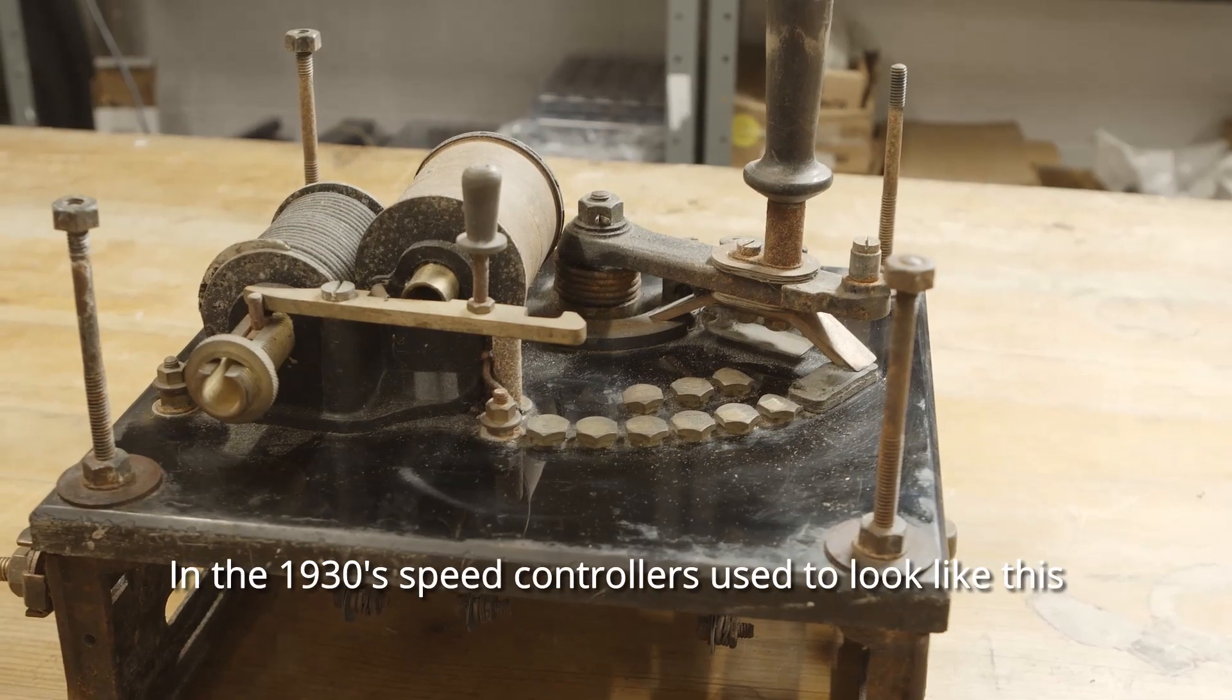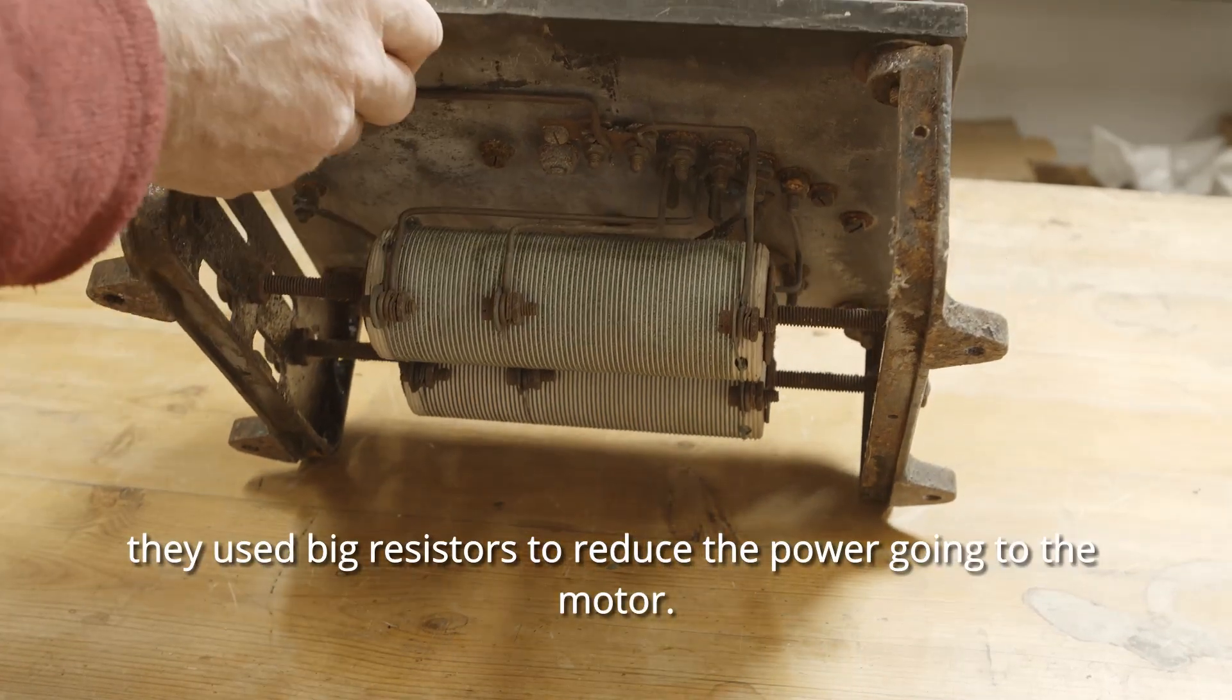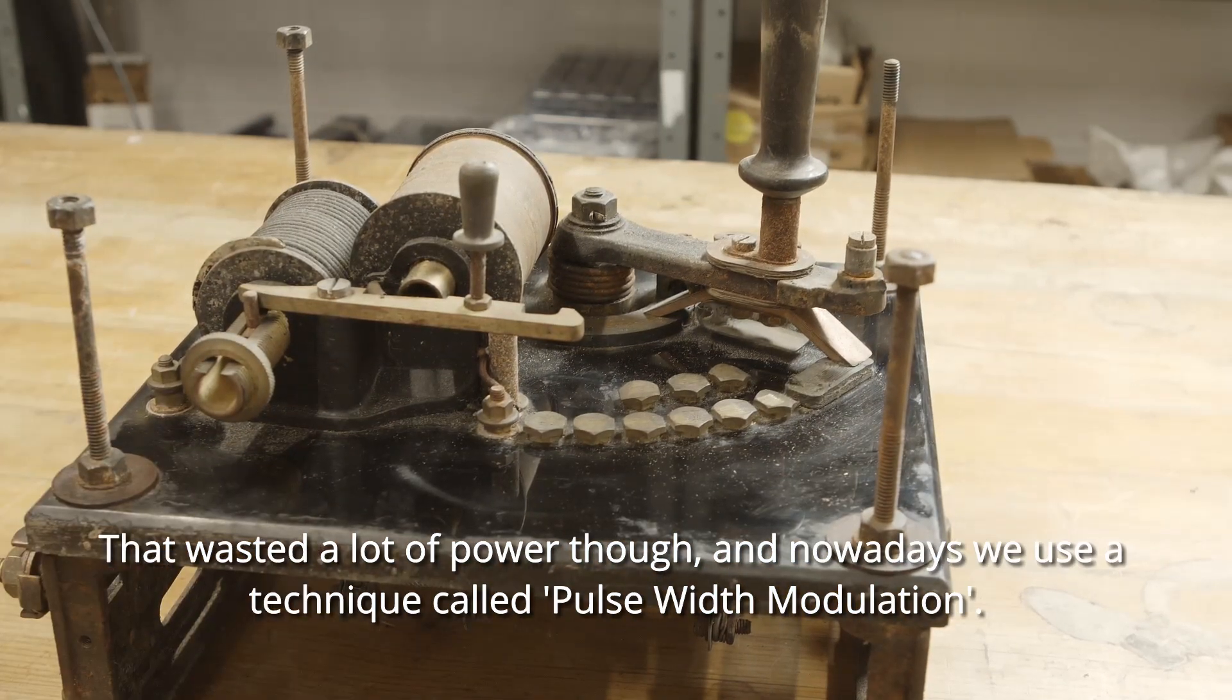In the 1930s, speed controllers used to look like this. They used big resistors to reduce the power going to the motor. That wastes a lot of power though, and nowadays we use a technique called pulse width modulation.